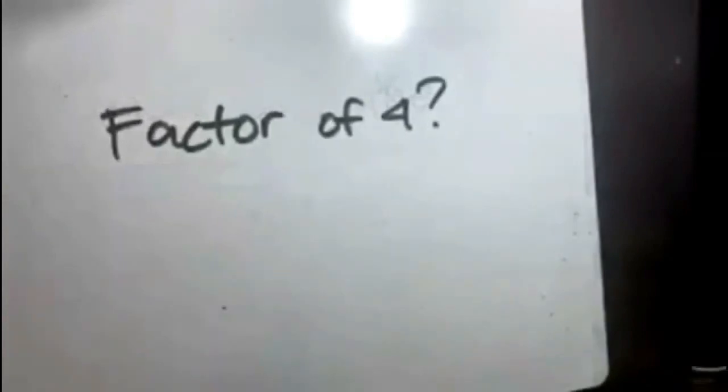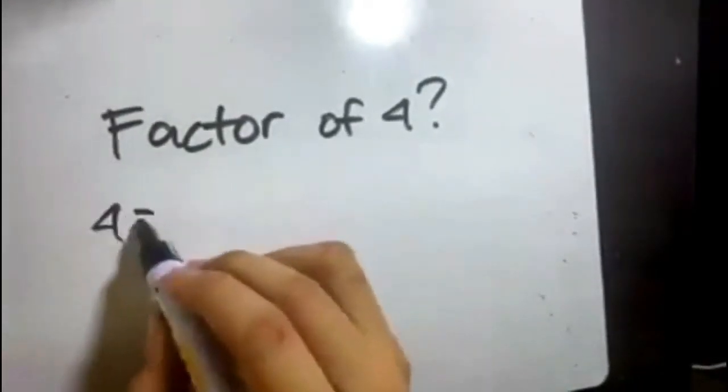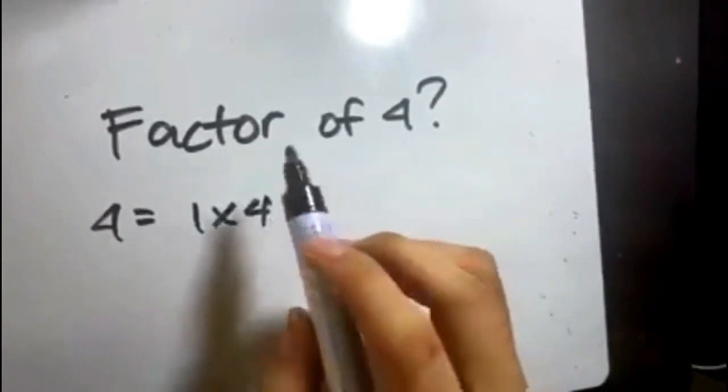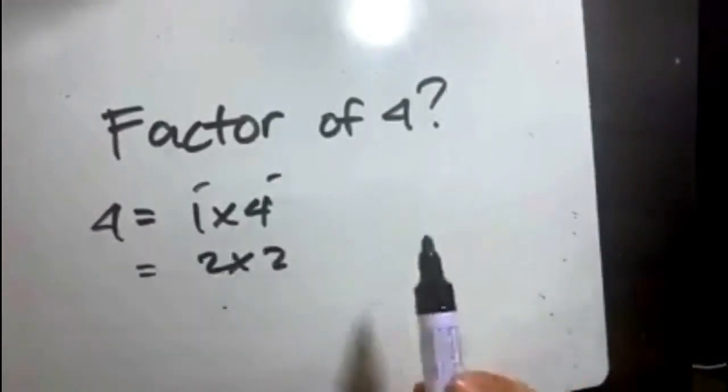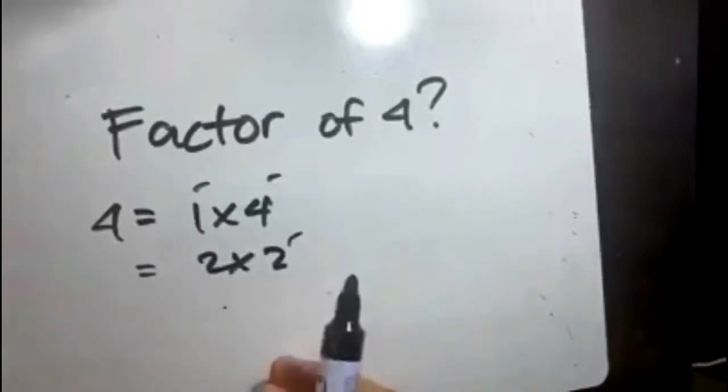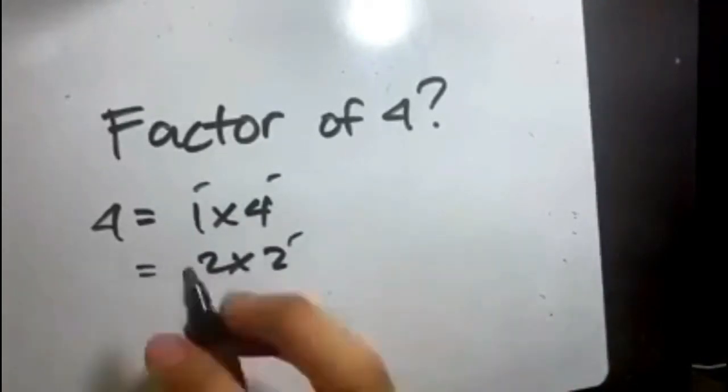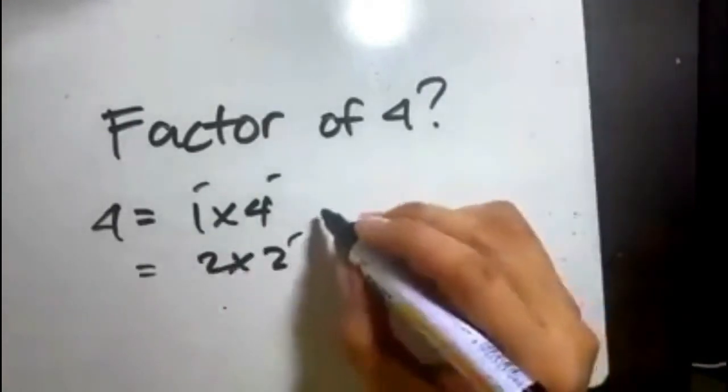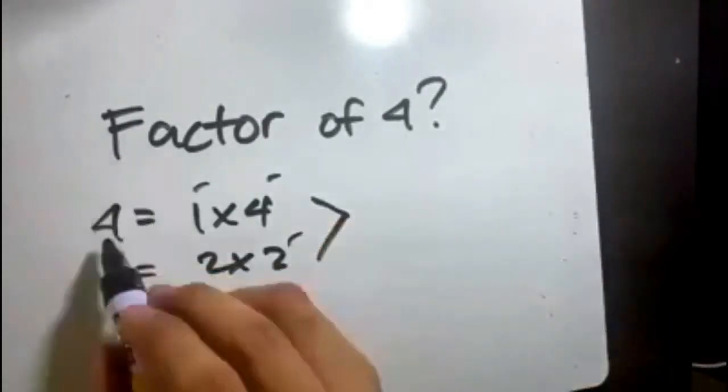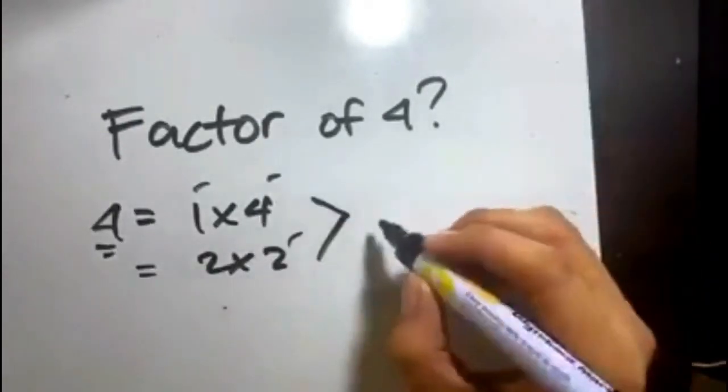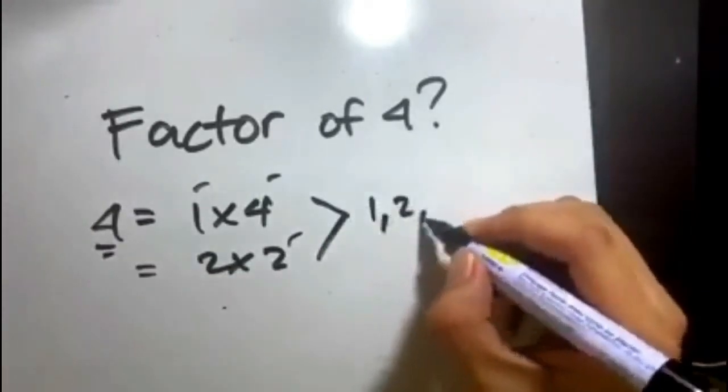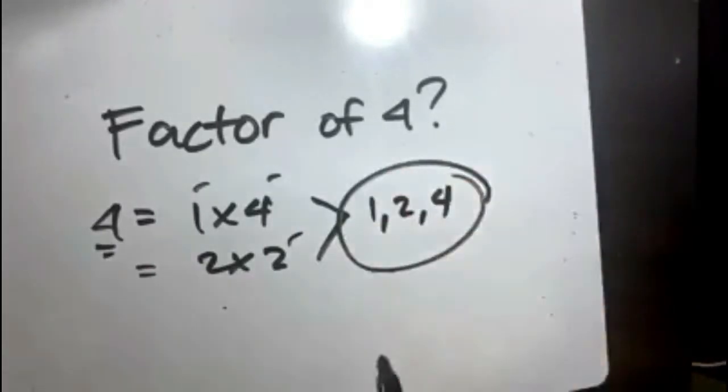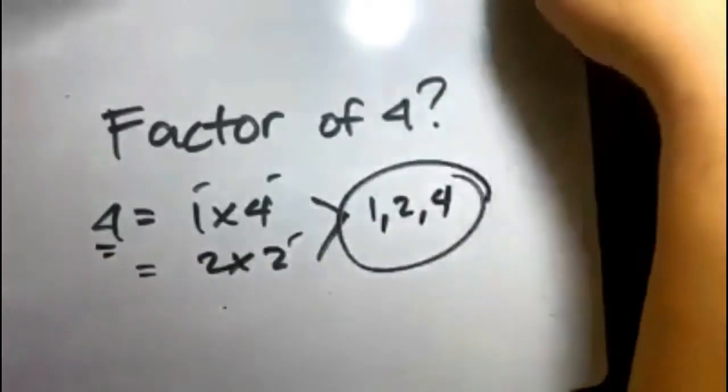Here is another example: factor of 4. Pretty easy—1 times 4, we can have a factor of 1 and 4 again. And 2 times 2. We can't multiply any other numbers to have a product of 4, so the factors of 4 would be 1, 2, and 4.